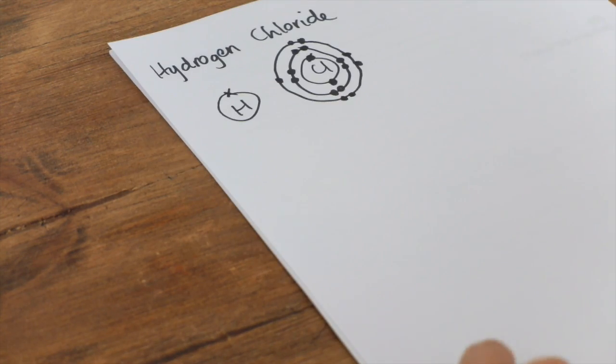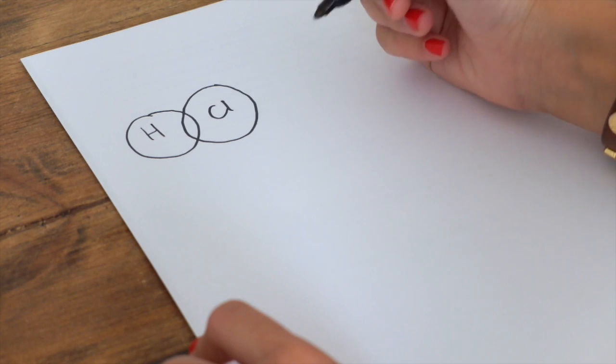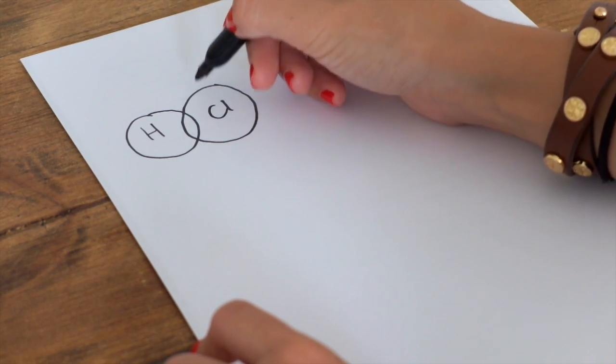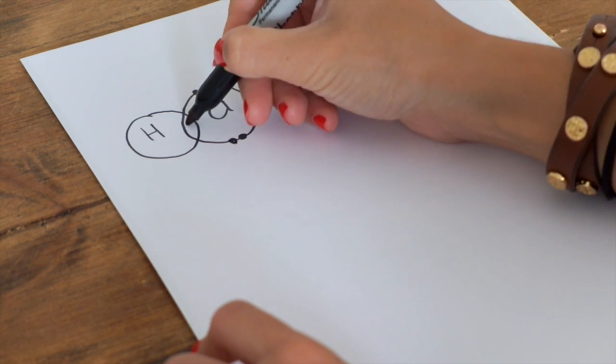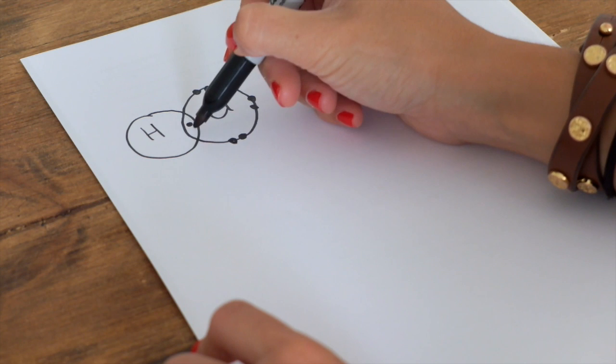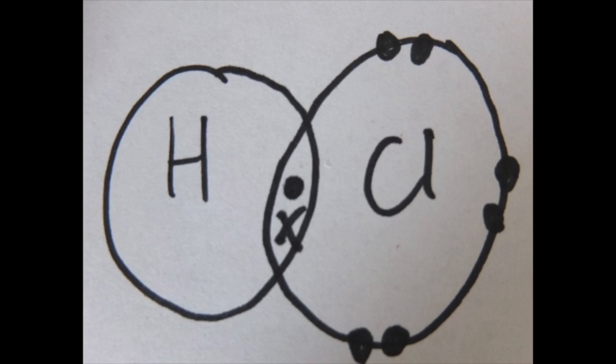So I'm going to draw you how this would look as a covalent bond. Different people have different ways of drawing this, but I draw them overlapping, so you can see the sharing of electrons. We're going to fill in the outer shell of chlorine again. There's its final electron. And then hydrogen just had one, so we're going to pop it there. Now, can you see, because they're sharing, they both have a full outer shell. Hydrogen has two, and chlorine has eight.